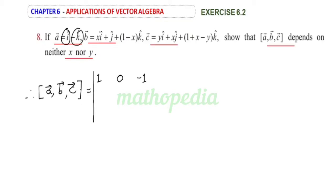Then B vector: coefficient of i is X, then coefficient of j is 1, then coefficient of k is 1 minus X.